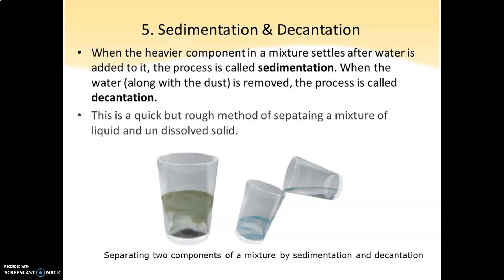Decantation is the process of pouring out the clear liquid without disturbing the sediment. Sedimentation is the process, and the thing that settles down is known as the sediment. The clear liquid above is your supernatant liquid — so the clear water is your supernatant liquid and the sand settling down is the sediment. These processes are used to separate heterogeneous mixtures.